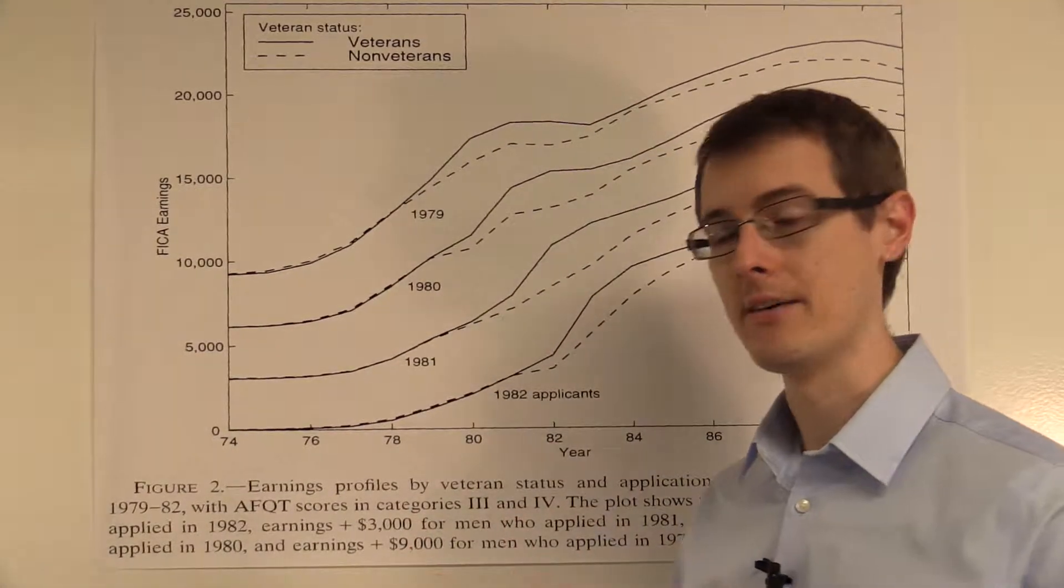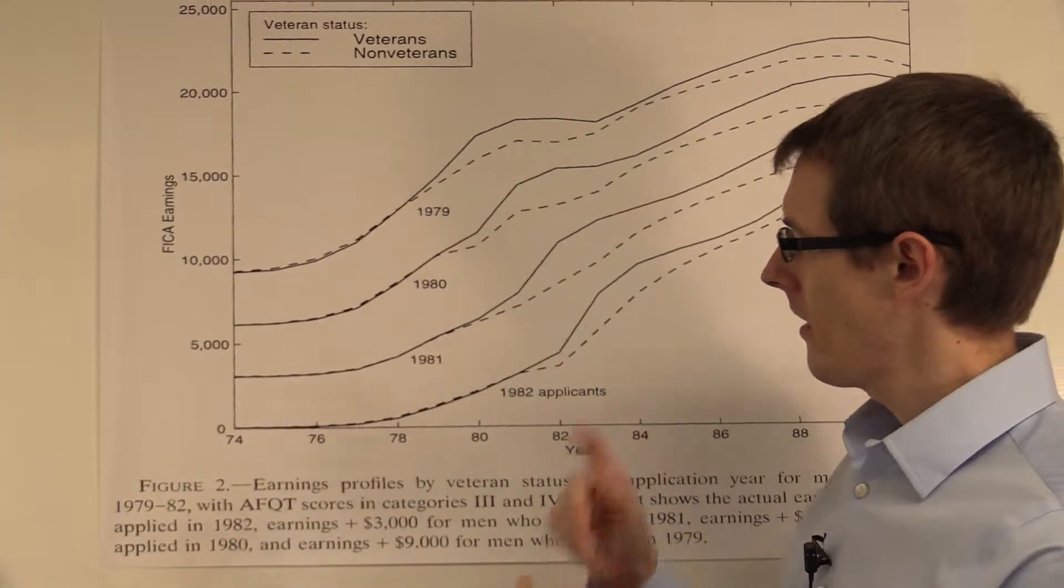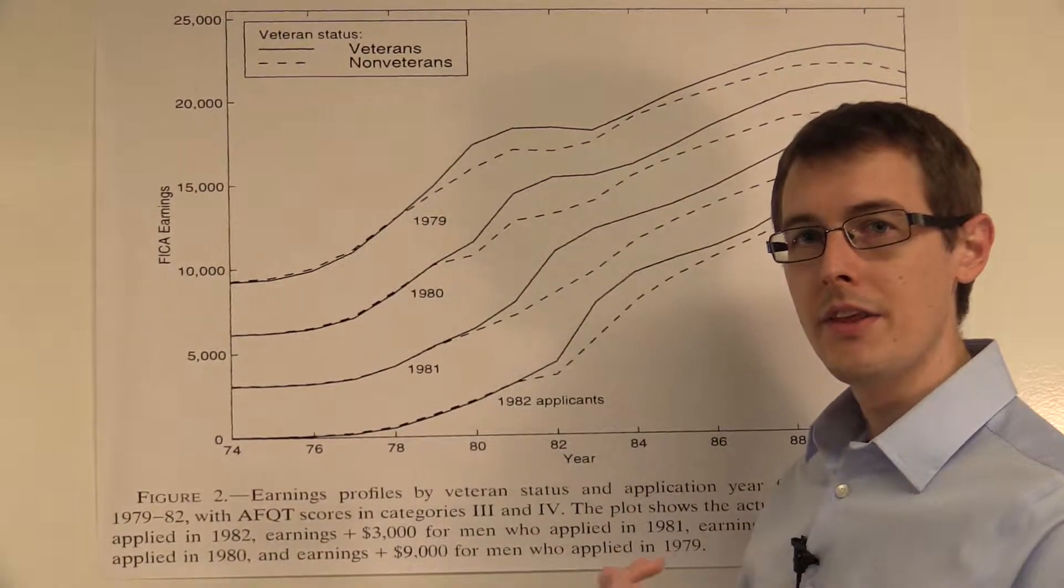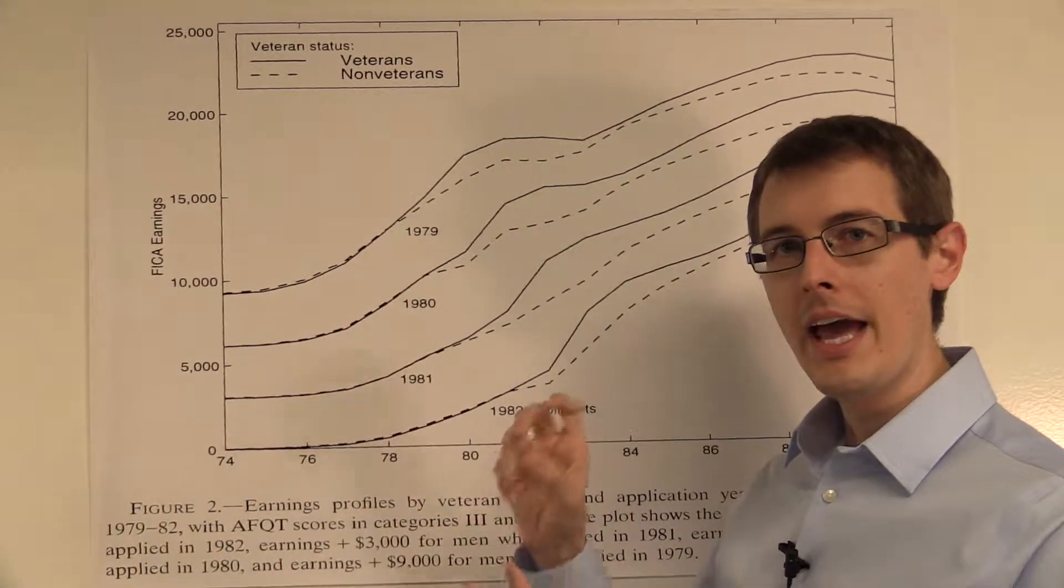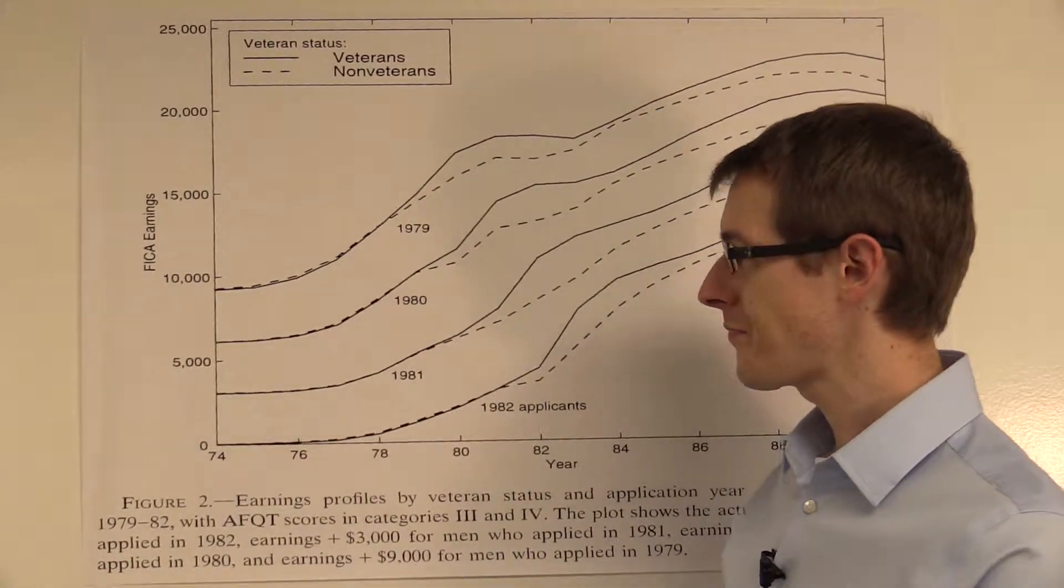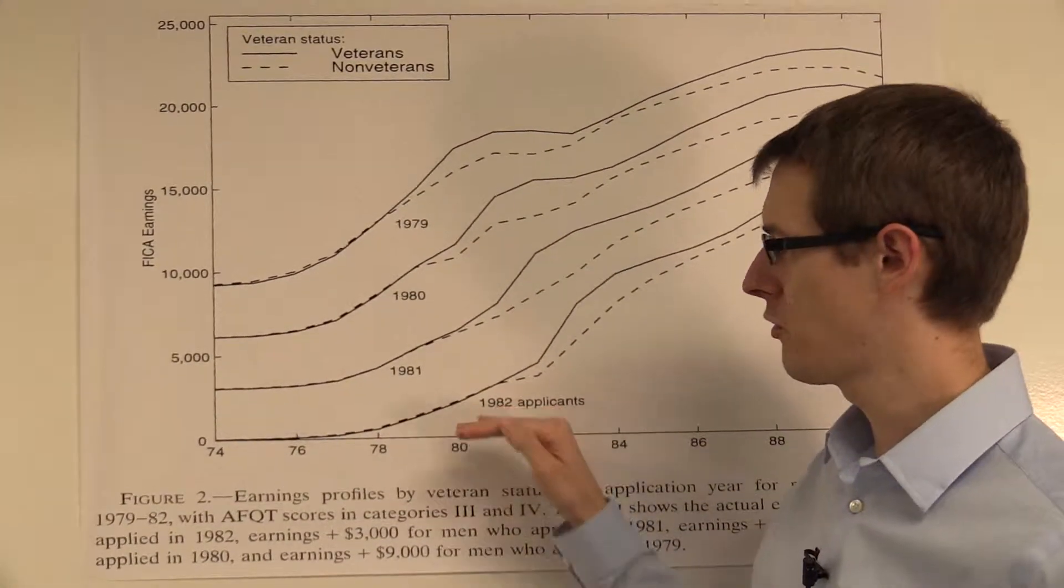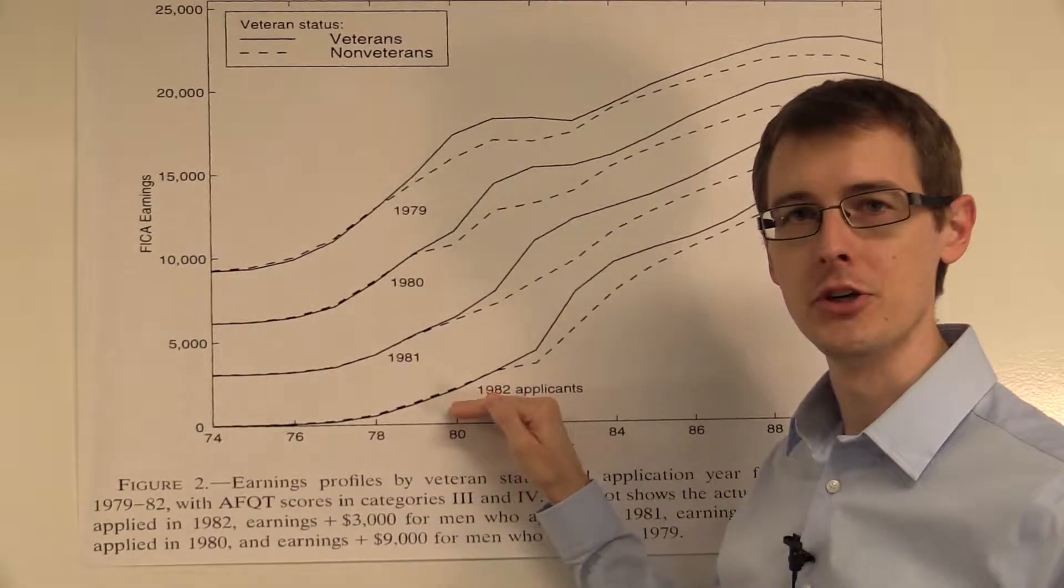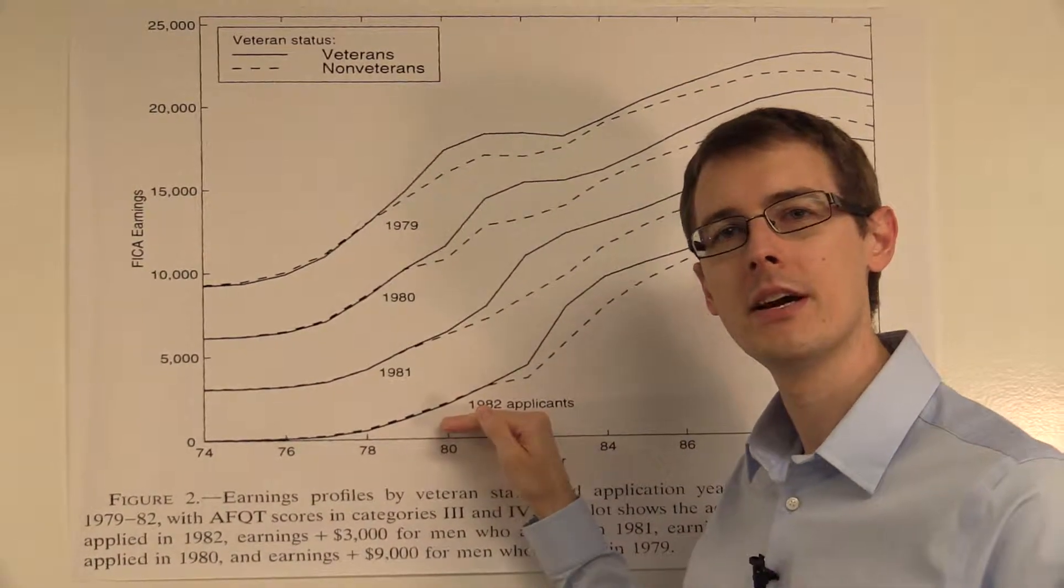Okay, so let's look at the data. He's got, for each applicant, the year that they applied and how much money they made in every year of their life. So let's look at just one group of applicants, 1982, people who applied to be in the military in 1982.